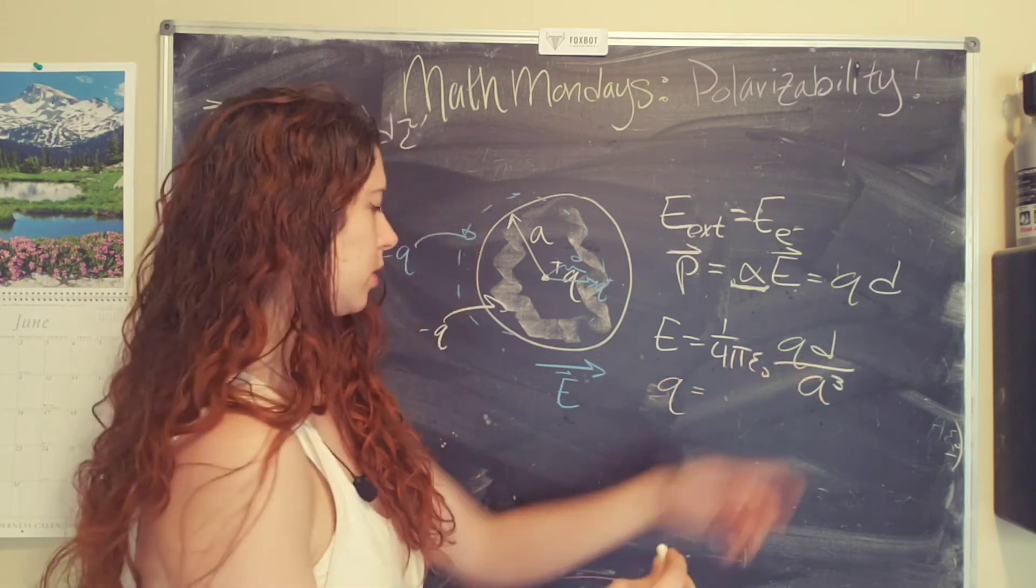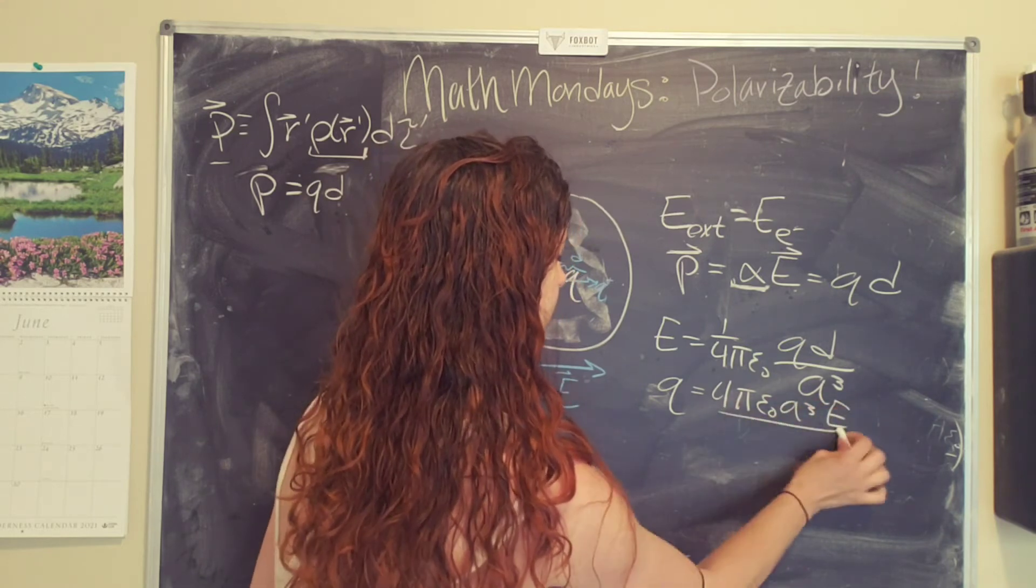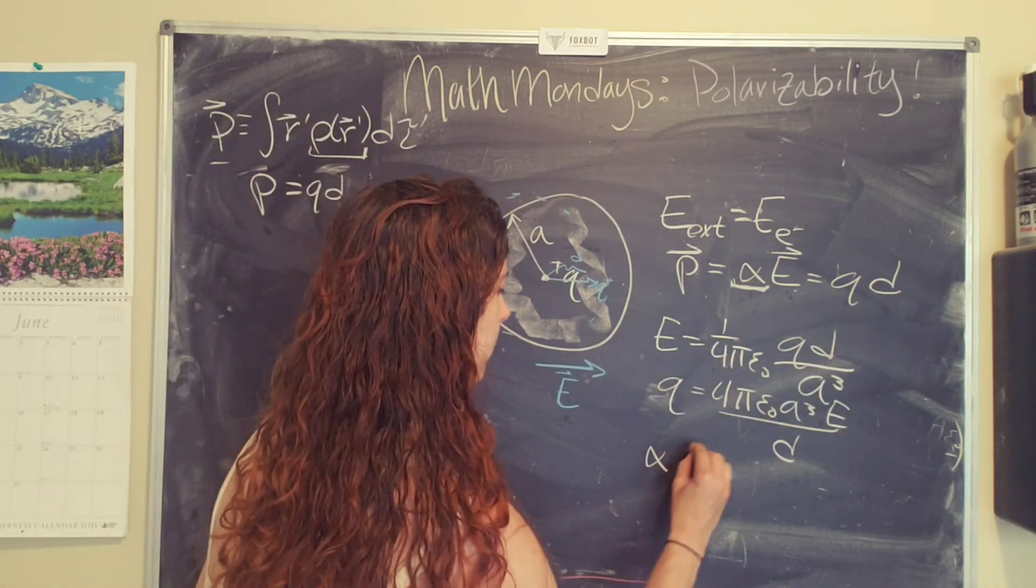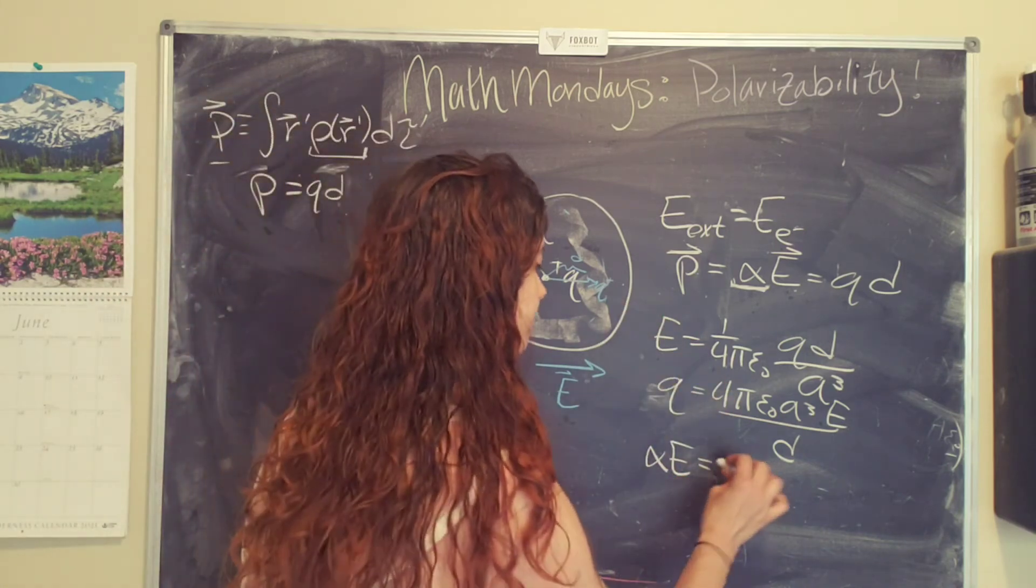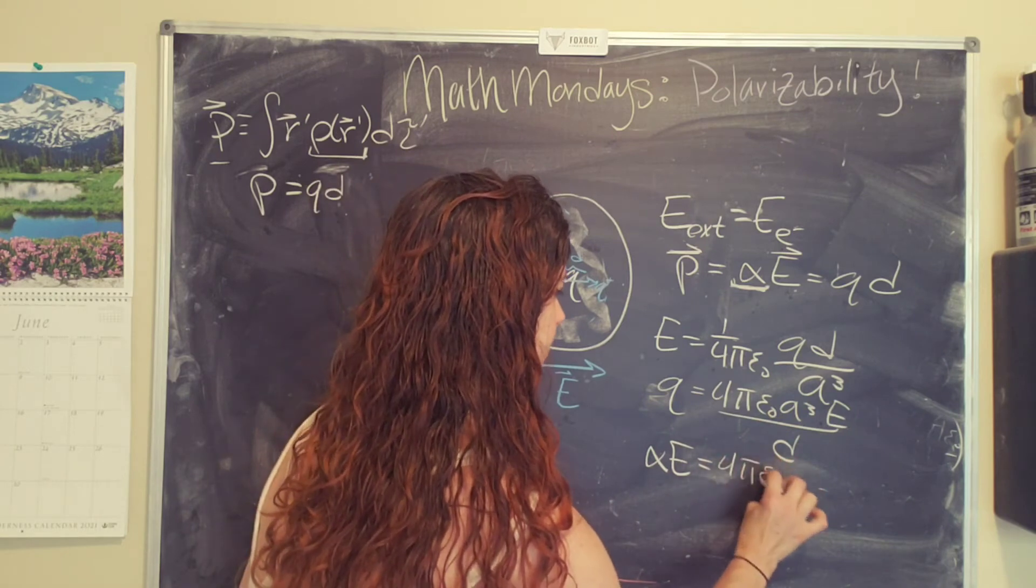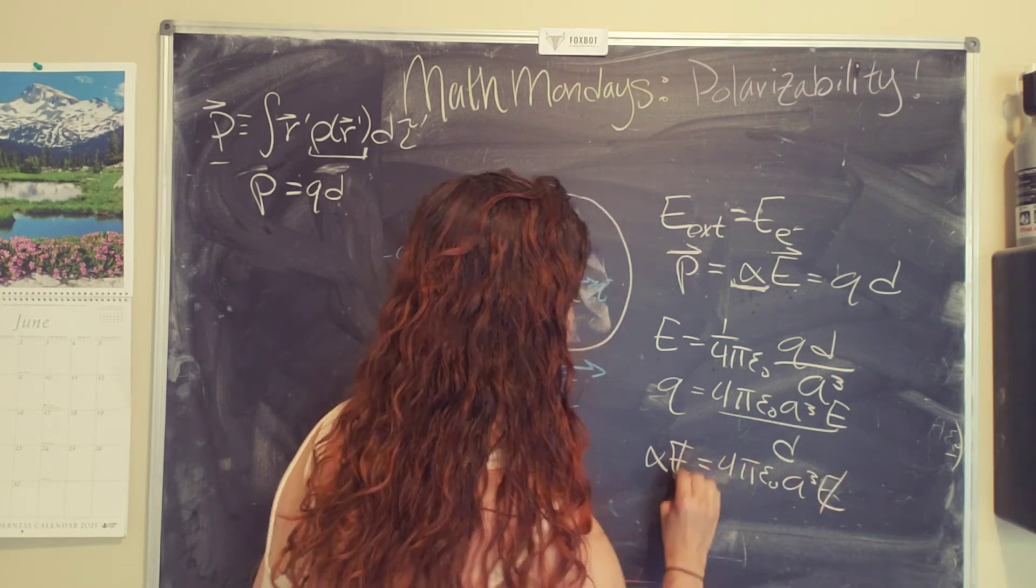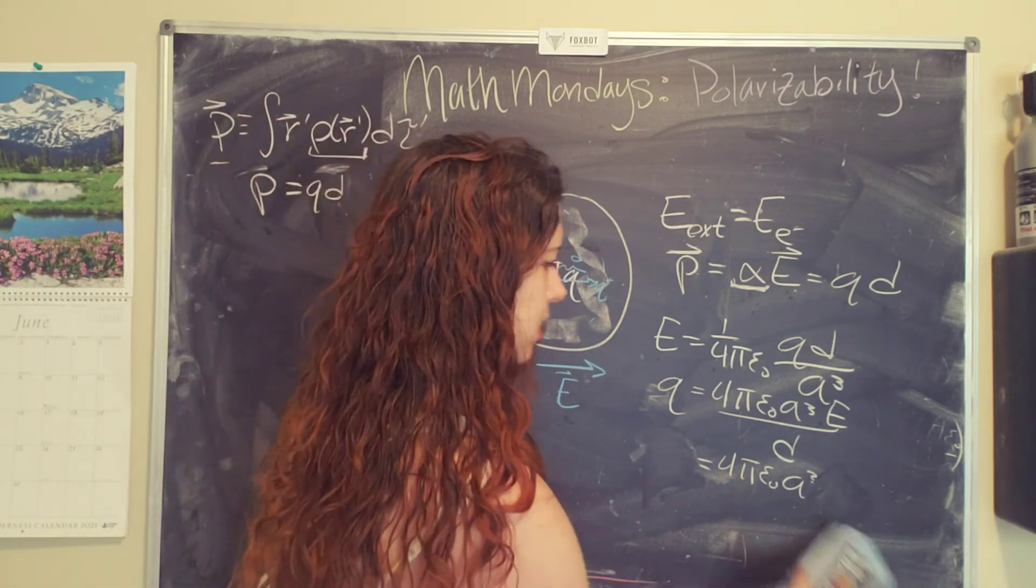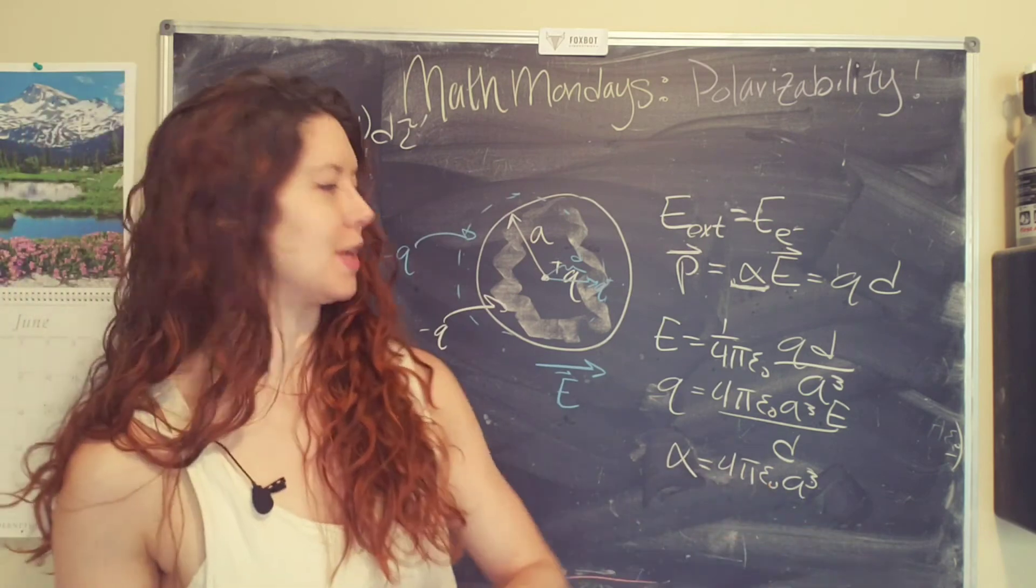So we're going to end up with q on one side, and we will get four pi epsilon naught a cubed times the electric field divided by d. When we plug it into this equation, the d is going to cancel. So we are going to get alpha times the electric field. And again, I'm going to drop the vector signs because we're looking at magnitudes here. This is a constant. It doesn't have a direction. So we end up with four pi epsilon naught a cubed. Again, the E's are going to cancel. And then you end up with alpha left over. So we're going to just get rid of those with the handy dandy eraser. Okay, so alpha equals four pi epsilon naught times a cubed.